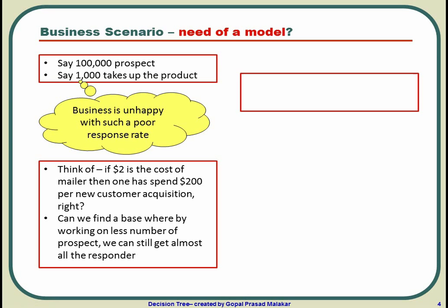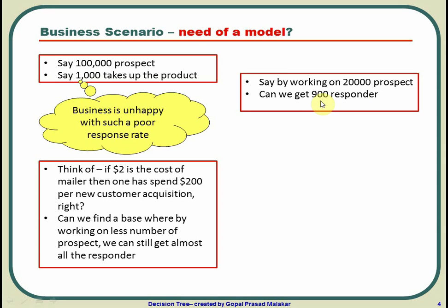The scenario is this: you work on only 20,000 prospects, which is just 20% of the total, and you can still get around 900 responders out of 1,000. So instead of mailing all 100,000, you identify a subset of high-propensity prospects and target only those — getting almost all the responders from a much smaller group.